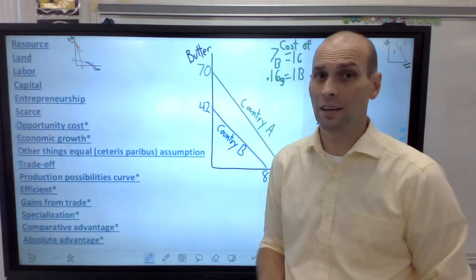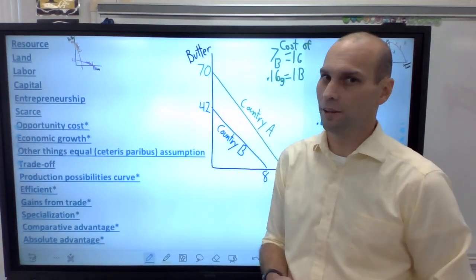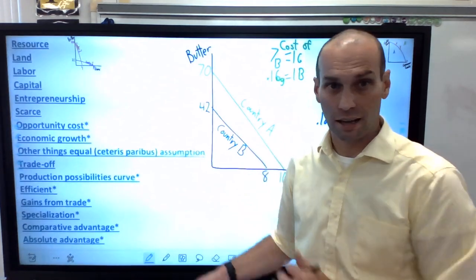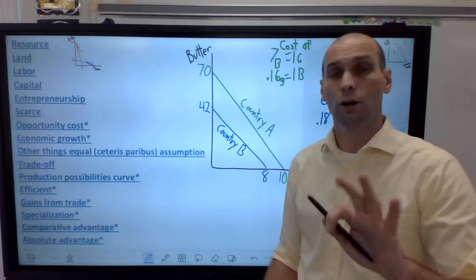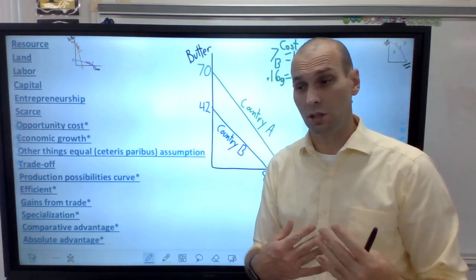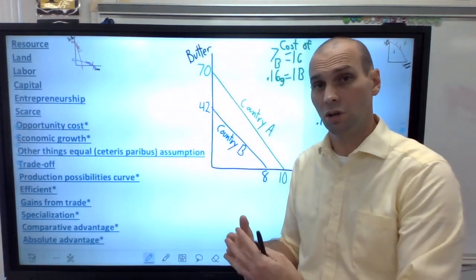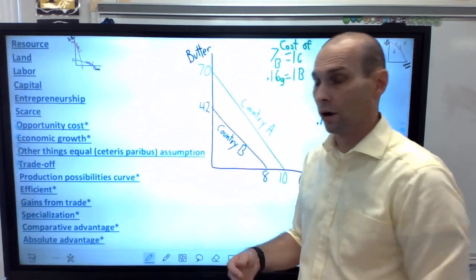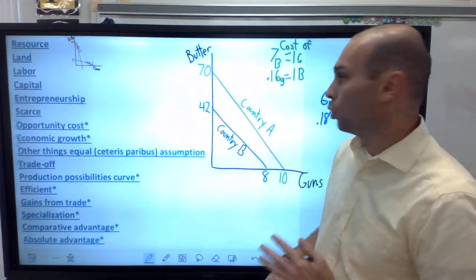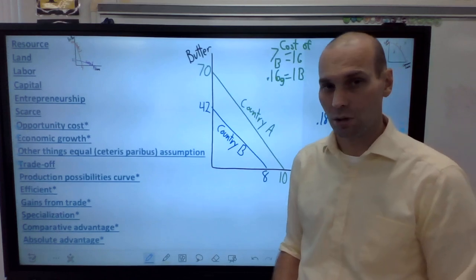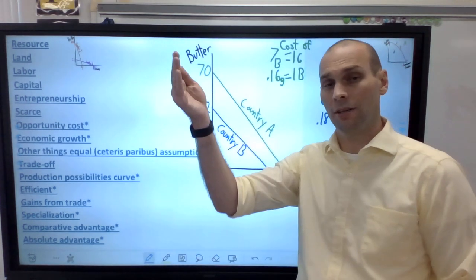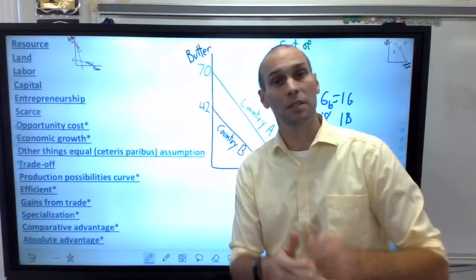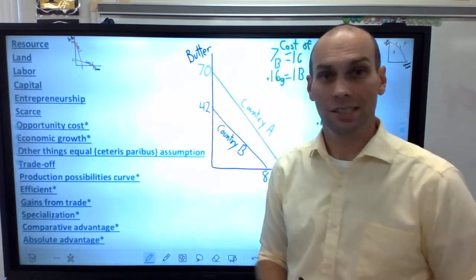So each one should do what they produce the least at, which is country B should produce guns and country A should produce butter. So that's the short of it. That is how comparative advantage works. The key there for comparative advantage right now is know the definition. That's kind of the hardest of the easy stuff. But make sure you study comparative advantage and know its definition. Comparative advantage always goes to the country that produces a good at the lowest cost compared to the other country. Or in short, whoever is best at producing that good should produce that good. I hope this video helped and I look forward to seeing you all on Monday.